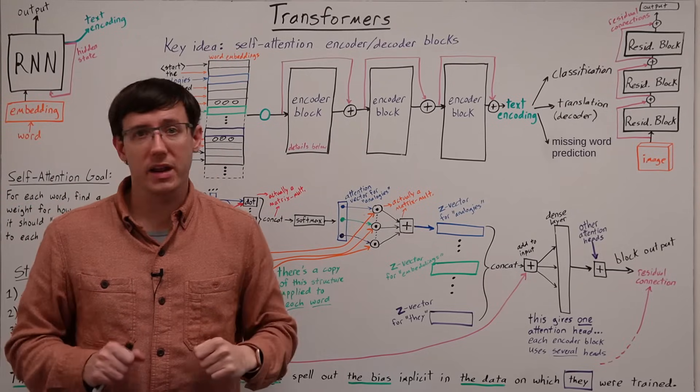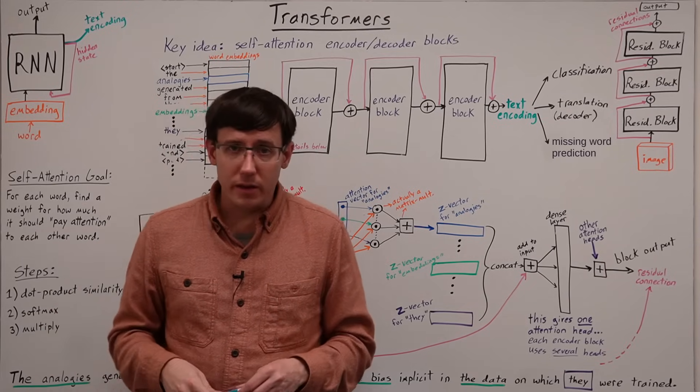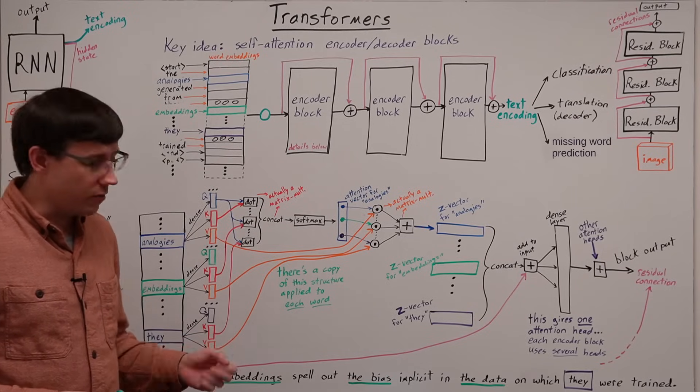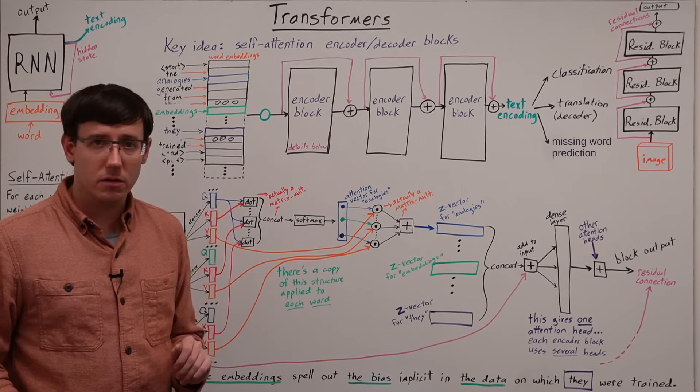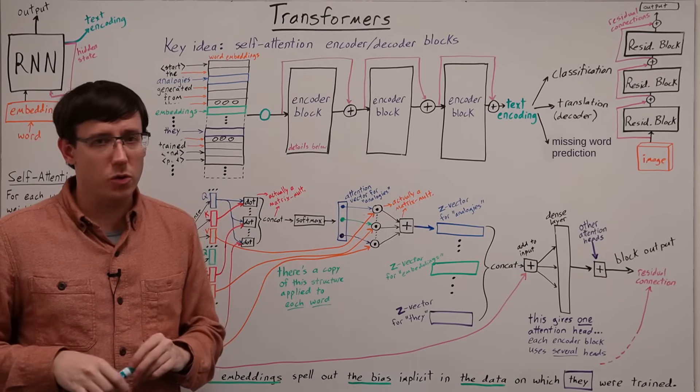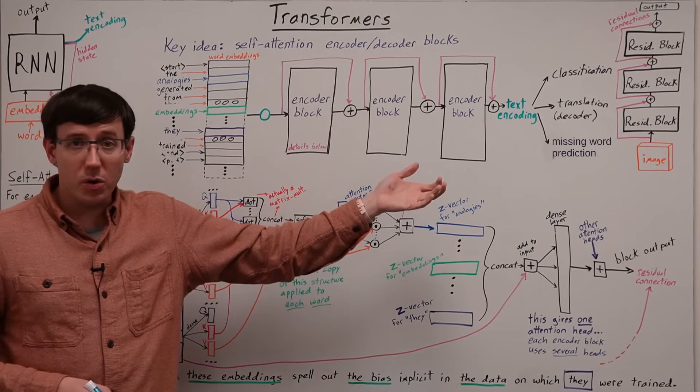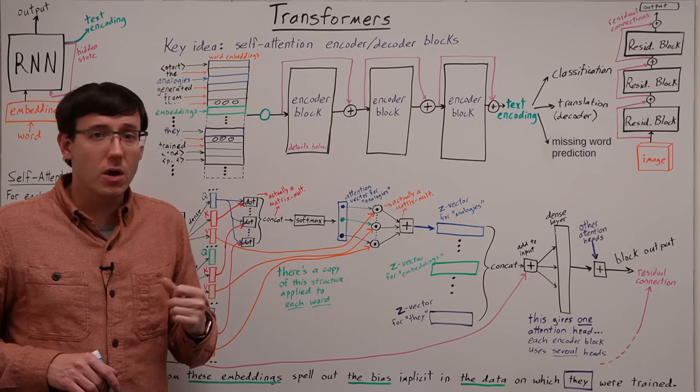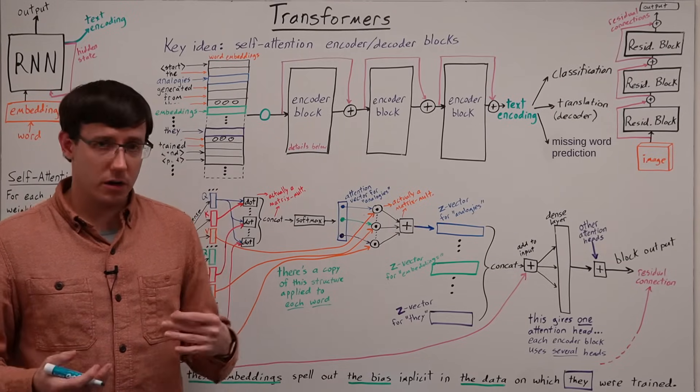One issue that I've glossed over so far is that the architecture here has no inherent understanding of which words are near one another in the sentence. And the ordering and proximity of words is often very important to understanding language. So, as part of the input to the network, we need to give it some information about where the words are. And that is done via a positional encoding.